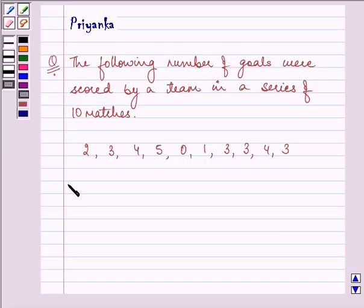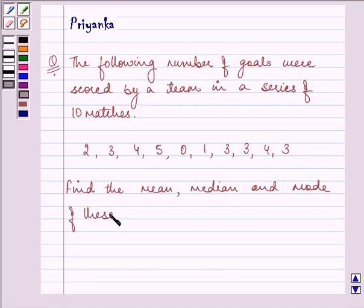It says the following number of goals were scored by a team in a series of 10 matches: 2, 8, 4, 5, 0, 1, 3, 3, 4, 3. What we need to find is the mean, median and mode of these scores.